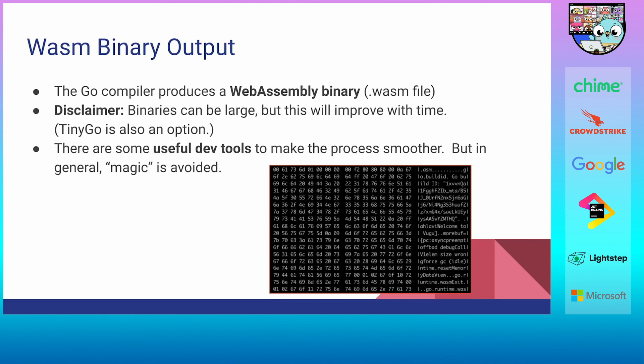The WebAssembly output is a .wasm file that gets loaded into your browser. Right now, the Go compiler produces executables somewhere in the few megabytes range. TinyGo is also an option — it's an alternate Go compiler based on LLVM that produces much smaller output. There are some tradeoffs because TinyGo is not a full-feature compiler, but you can pick whichever is best for your project. The core idea is to avoid things that are too magical — the Go compiler is just used as the Go compiler.